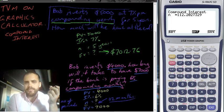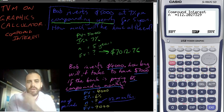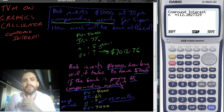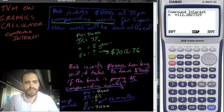All right. That is using your graphics calculator, the TVM mode, to solve compound interest questions. All right. Thanks a lot, guys.